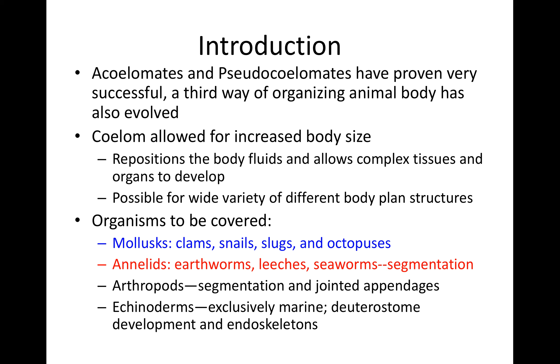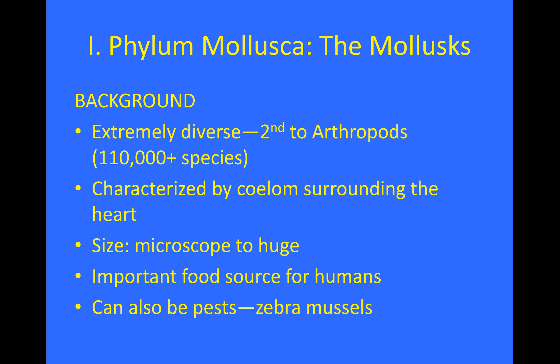Annelids' primary characteristic is segmentation. The lophophorates are actually all marine, and they're kind of cool to look at. Phylum Mollusca — the molluscs — are very diverse, second to arthropods, with lots of different species. They have a coelom surrounding the heart. They can be really small or really huge, and they are a very important food source for humans. They can also be pests, especially in Minnesota with the zebra mussels.